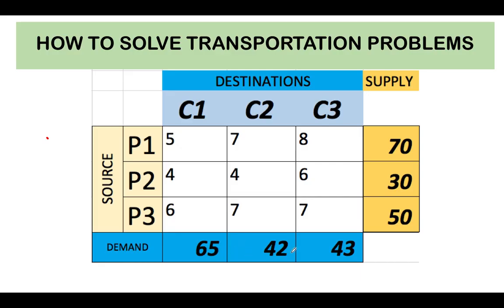In the least cost method, the first thing we do is inspect the unit cost of moving goods from one facility to one destination. Among the costs, the numbers four and four are the two lowest costs. Since there are two of them, we can randomly select either one. Let's select the first value — that is row number two, column number one.